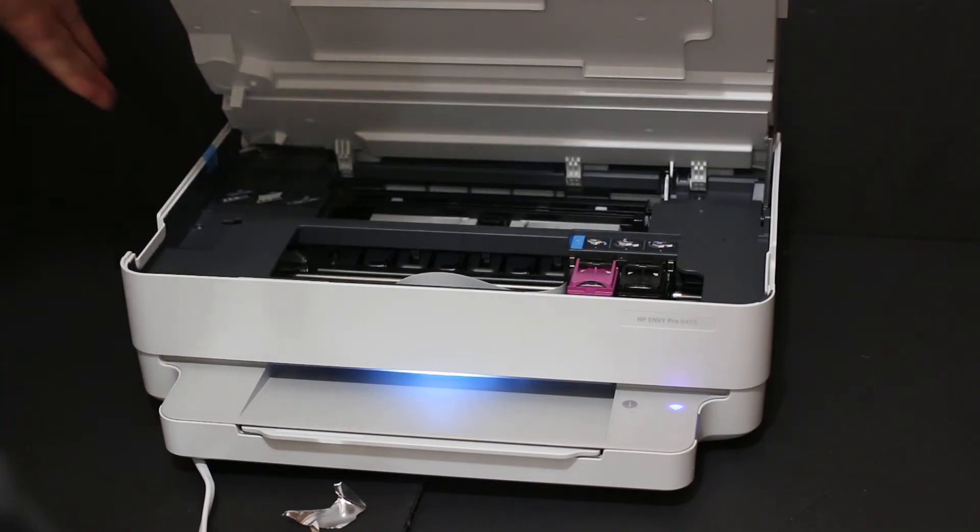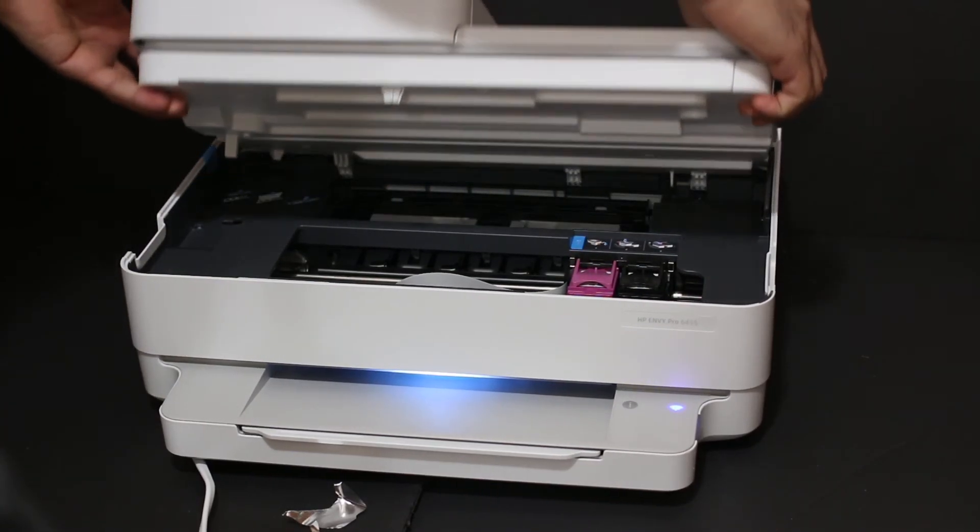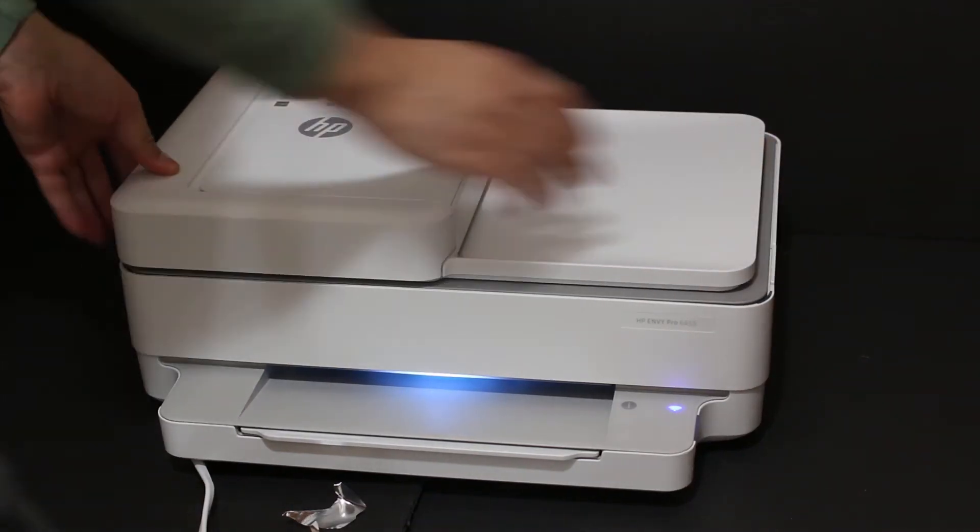Once we install the ink cartridges, we just close the chamber. Push it down a little bit and it will close. You can see all the yellow tabs here.